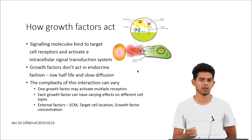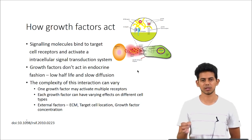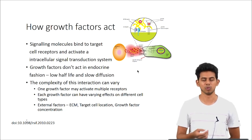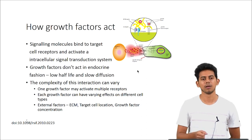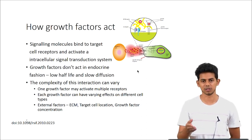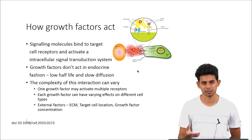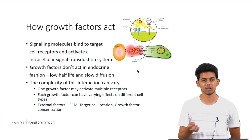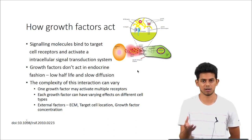How do these growth factors act? Like all signaling molecules, growth factors bind to specific receptors on the cell surface and activate an intracellular signal transduction system. Growth factors do not act in an endocrine fashion because they have a very low half-life, and are not usually released into the bloodstream to act on far-off organs or tissues — they act locally. The complexity of this growth factor interaction can vary with the receptor: one growth factor might activate multiple receptors on different cells and end up having a different effect on each. The ECM, the target cell location, and the concentration of the growth factor all play a huge role in how growth factors act.